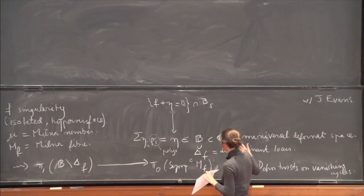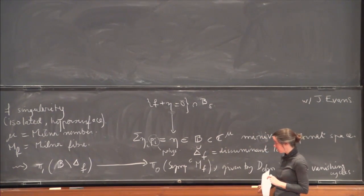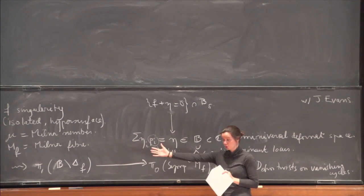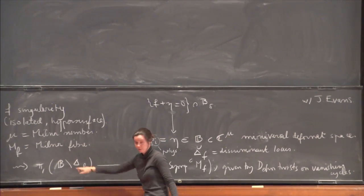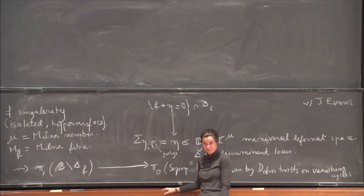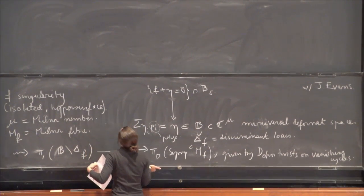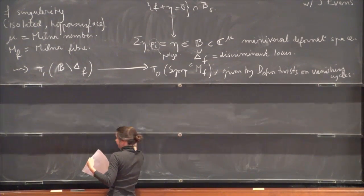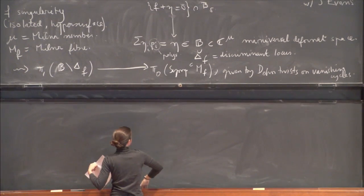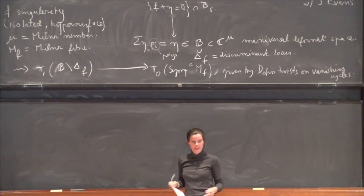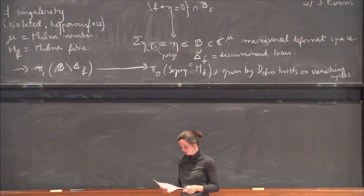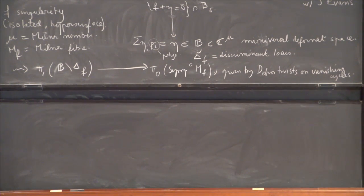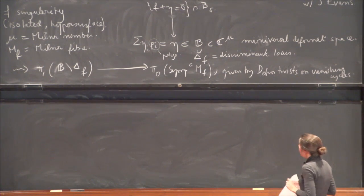So, the sort of overarching motivational question is to try to understand what sort of a representation of this fundamental group this map gives you. Also, I know it's a large vector hall, but feel free to cut in and ask questions.